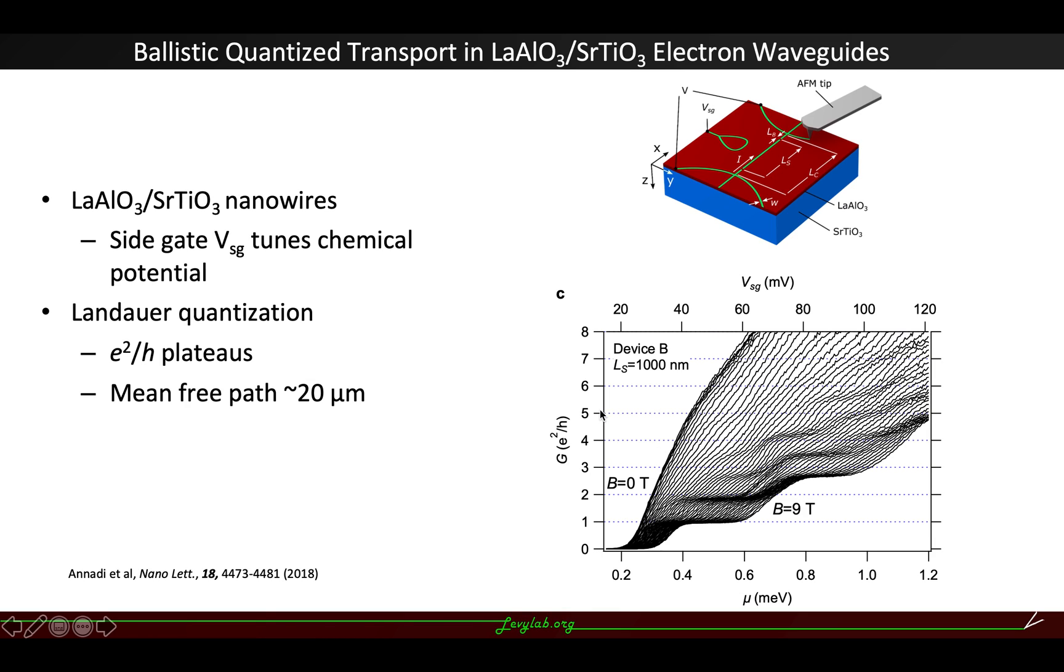Basically, from the conductance, we can see this e²/h plateaus clearly, which gives us a mean free path of the device around 20 micrometers, which shows that this is really a ballistic device.